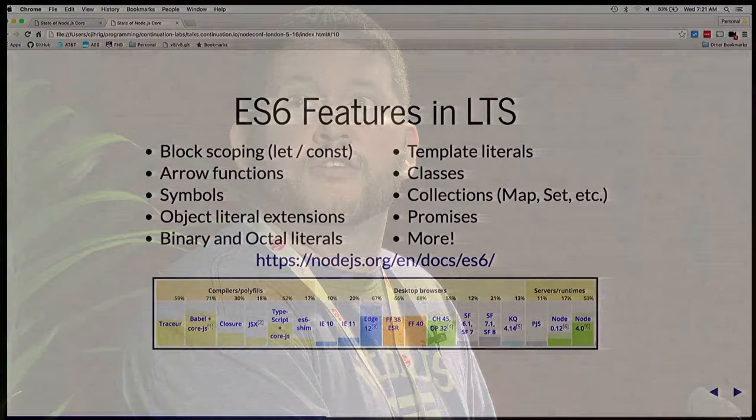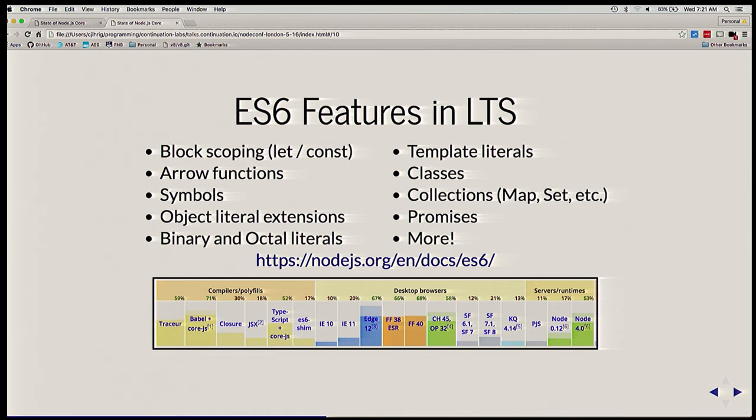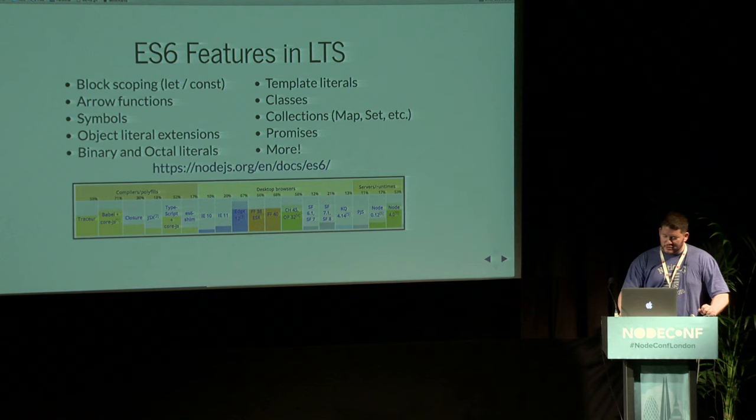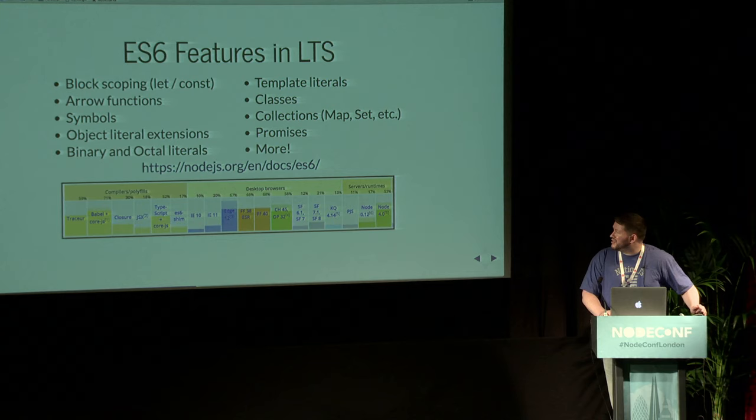Everyone was excited because of ES6. These were some of the features that went into LTS — people can now reliably use things like let, const, arrow functions, symbols, classes, things like that. Node V4 was up to about 53% native ES6 support, up from 17% on 0.12. That was a huge jump. At the time, Babel was only at about 71%, so that was still pretty good.